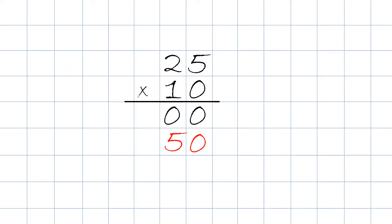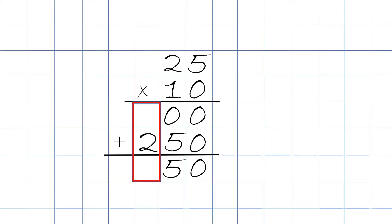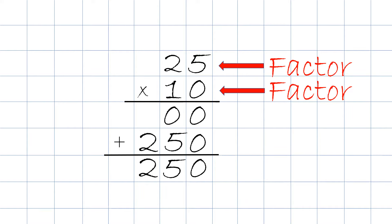Then we take 1 times 2 and the answer will be 2. Then we add the double zeros plus 250, and we always start with the right column. So 0 plus 0 will be 0, 0 plus 5 will be 5, 0 plus 2 will be 2. So the answer is 250.